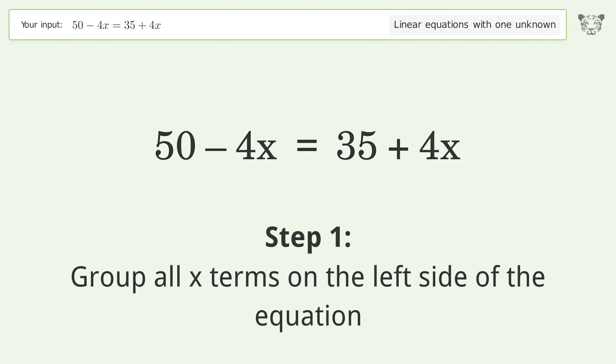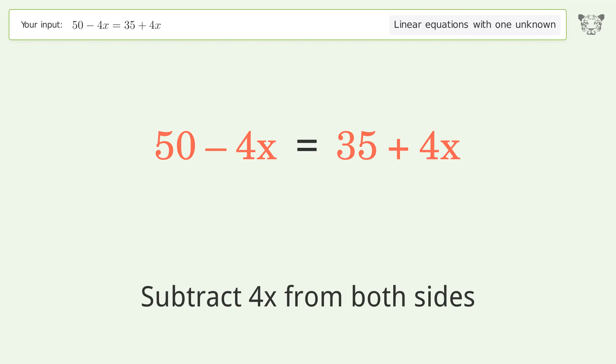Group all x terms on the left side of the equation. Subtract 4x from both sides.